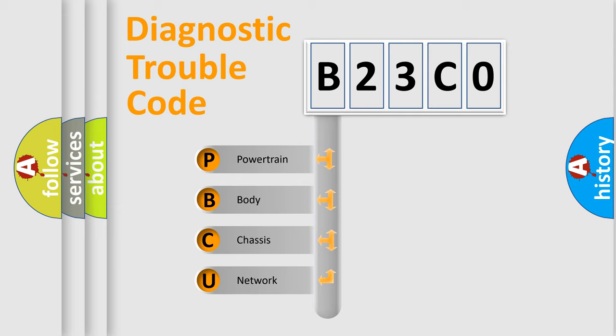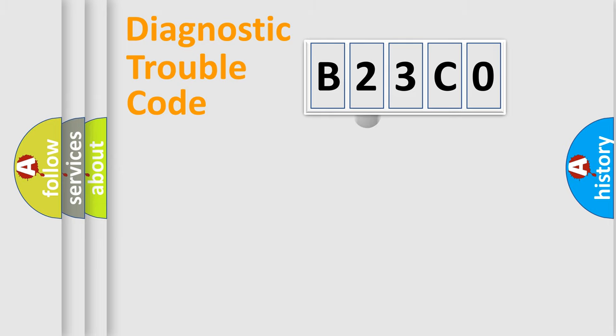We divide the electric system of automobiles into four basic units: Powertrain, body, chassis, and network. This distribution is defined in the first character code.